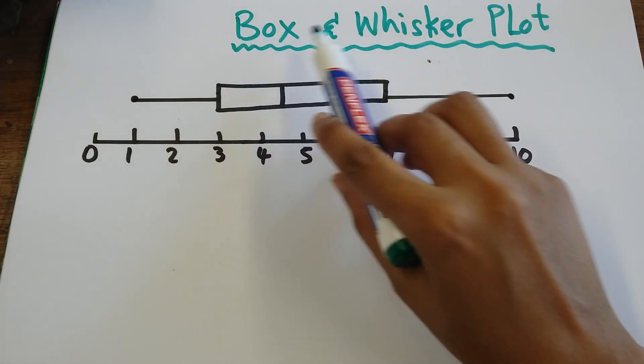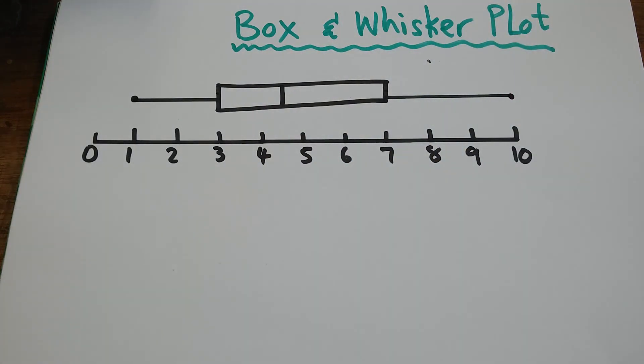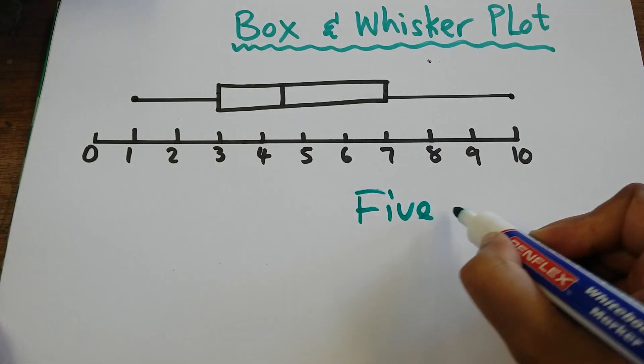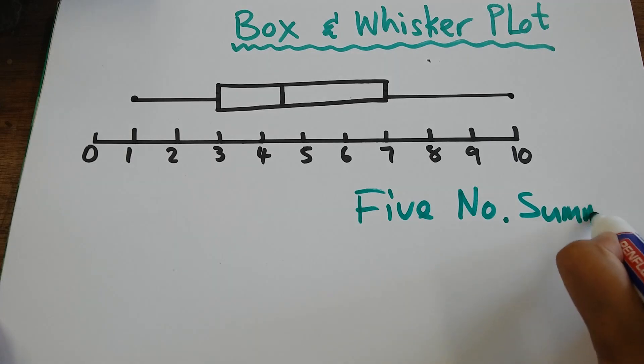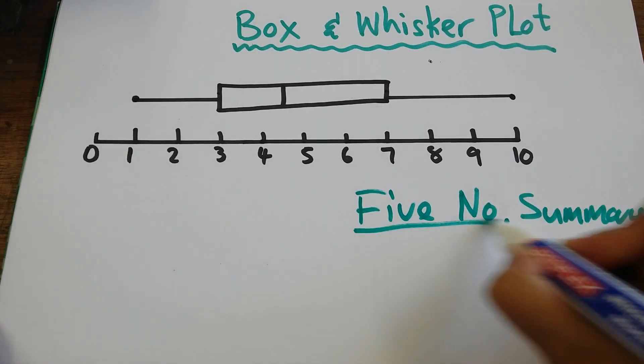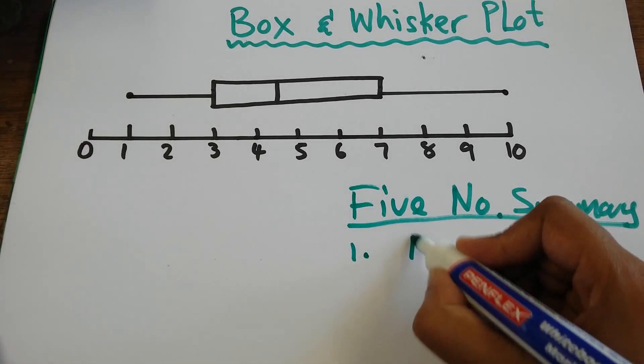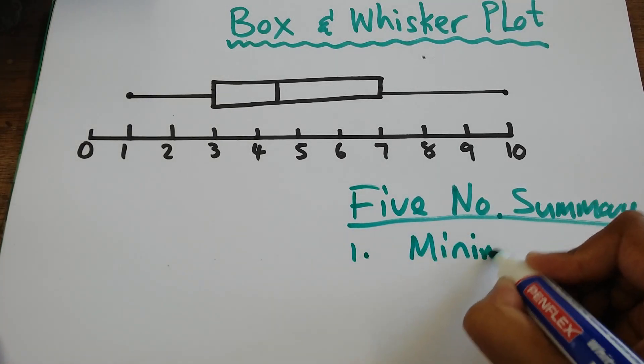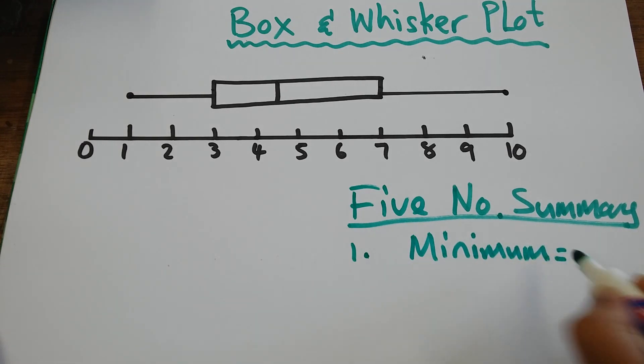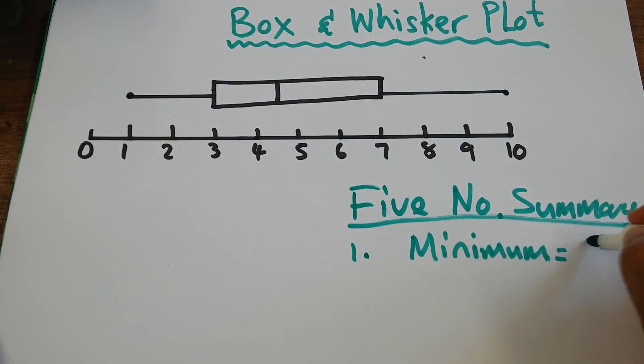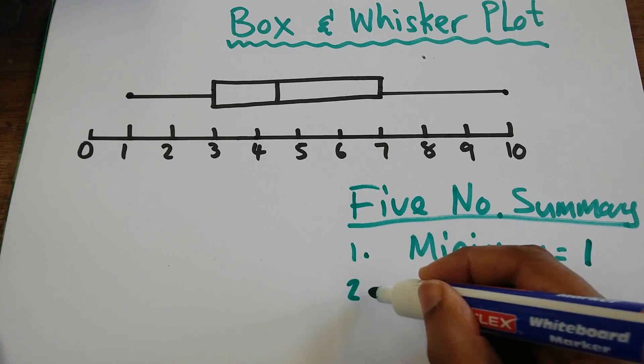Today we're looking at the box and whisker plot. We're going to learn how to use the box and whisker plot and come up with our five number summary. Our five number summary: first, we will start with our minimum. According to this box and whisker plot, my minimum value is at the end, which is one.